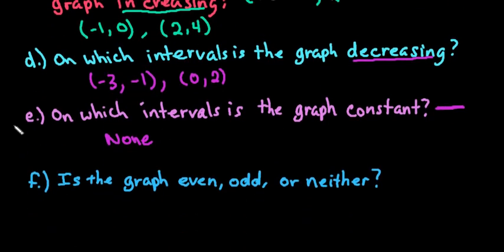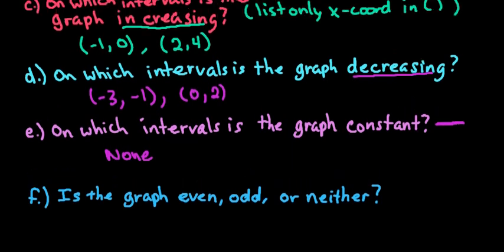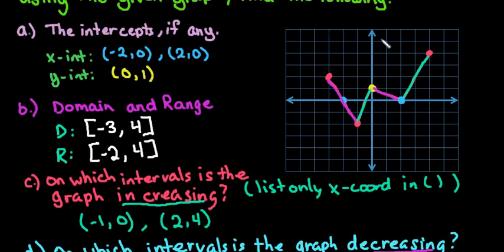And then the last question it asks us, is this graph even, odd, or neither? In order to be even, it has to be reflected across the y-axis. So that means that if I took this point and I folded it over here, that it would be in the same place. So we can see that it's not. So it's not even.